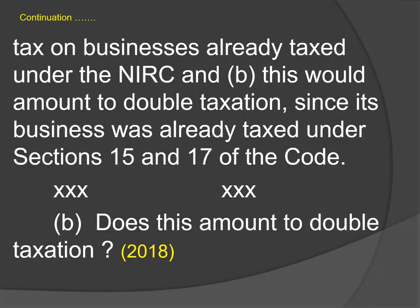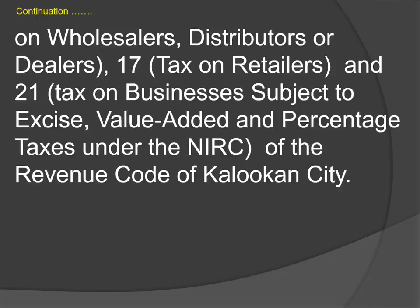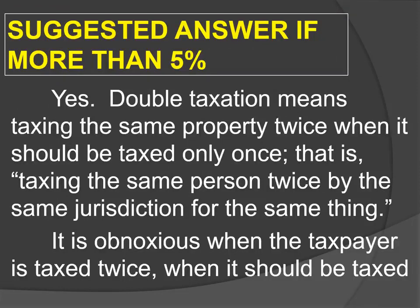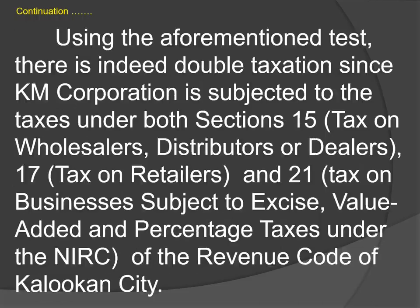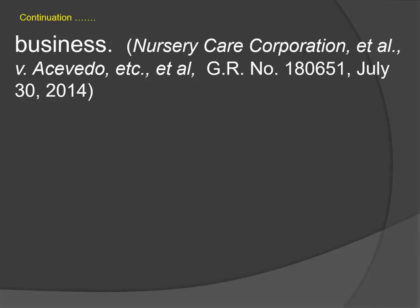Does this amount to double taxation? Go back — 5% or more than 5%. Yes, this amounts to double taxation since KM Corporation is taxed twice when it should be taxed but once. There is indeed double taxation since KM Corporation is subjected to the taxes under both Section 15 and Section 17 of the Revenue Code of Kaloocan City. This was a 2014 question. You have the earlier case of Coca-Cola citing Nursery Care versus Acevedo — that's why I call this the Acevedo case; it's easier to remember.